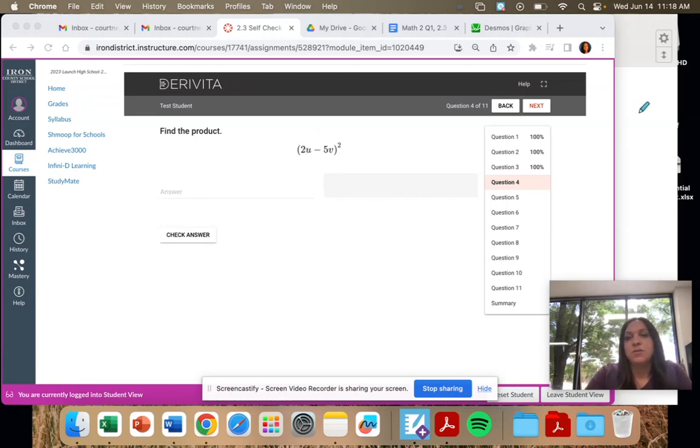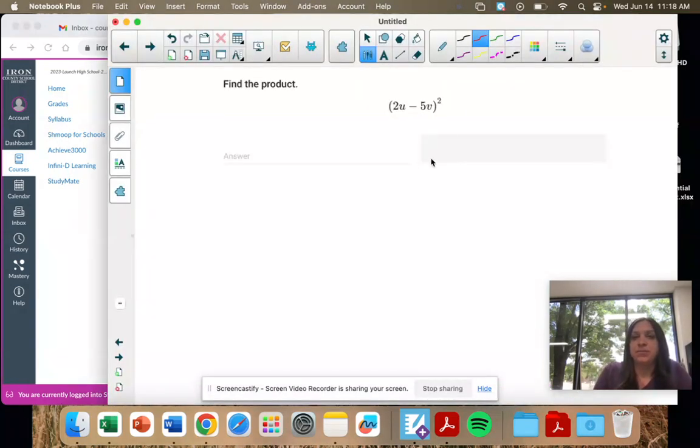So number four, we have a binomial squared. So 2u minus 5v times 2u minus 5v. And when we have that, we can use our shortcuts.